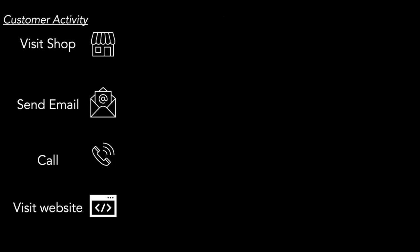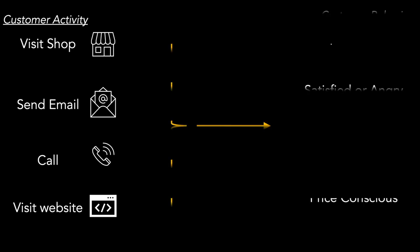Now let us move to the next customer analytics called customer behavior analysis. A customer can perform various activities such as visiting your shop, sending emails, calling the call center, or visiting your website. All these activities generate data, and data science can help you understand customer behavior — for example, whether a customer is a frequent visitor, satisfied or angry, digitally savvy, or price conscious.